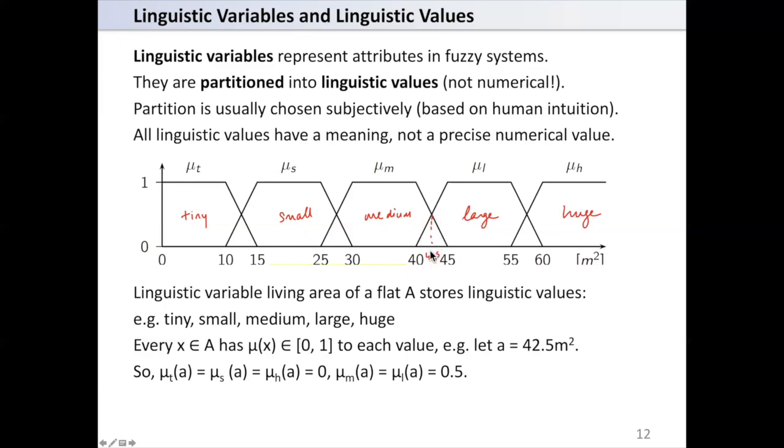And also the membership value in the fuzzy set large is again 0.5. And its membership value for this area in tiny and small fuzzy sets is 0, and also the membership value is 0 for the fuzzy set huge. So membership tiny at A equals membership small at A equals membership huge at point A, where A is 42.5, equals 0. However, the membership value for the sets medium and large, μM and μL, are equal to 0.5.